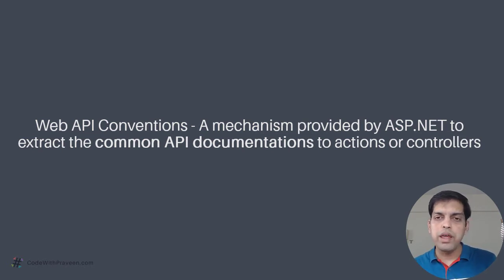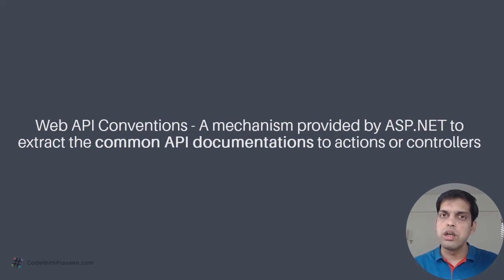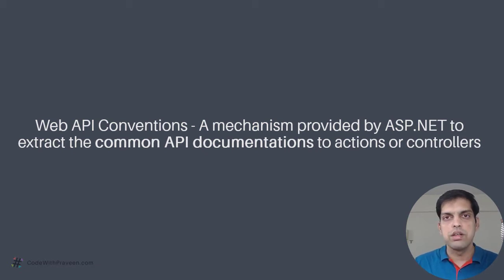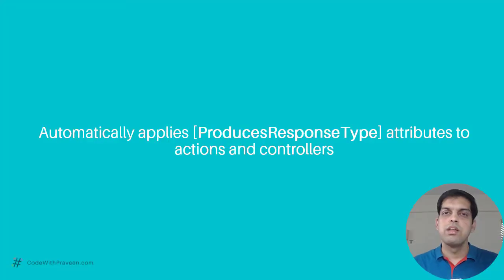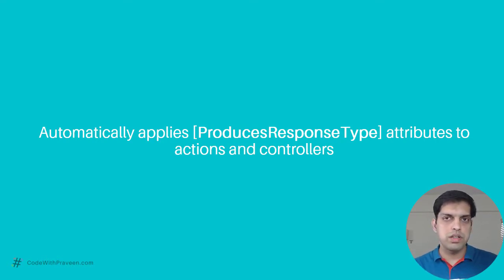What if you could automate applying these attributes for action methods in a more generic manner? Instead of writing the attributes for each of these action methods and controllers, it would be great if there were a way to apply them in an automated fashion. Those are referred to as Web API Conventions. These conventions are going to automatically apply producer's response type attributes to controllers and actions. Once enabled, instead of manually adding these attributes to your action methods, API Conventions takes care of that for you.